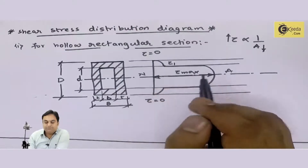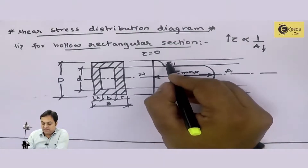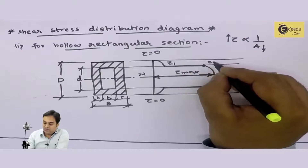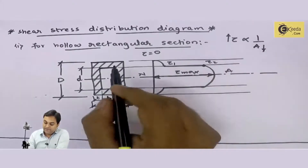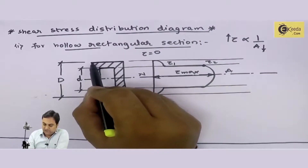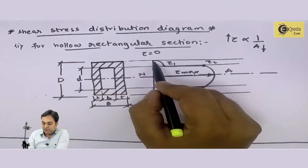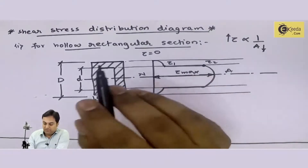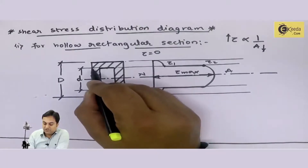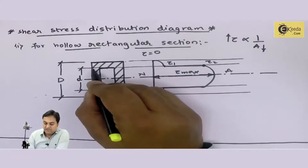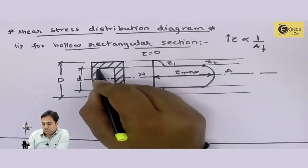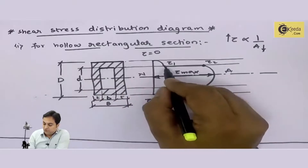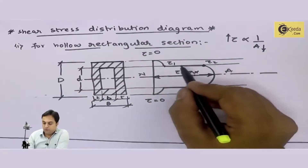I can write this as tau1 — tau1 is the stress at the inner layer. After this, I have another shear stress value which is called tau2. The width decreases from capital B to small b; when width is decreased, the shear stress goes from tau = 0 to tau1, that is from outer width to inner width. Here is the thickness of the flange, and if I need this portion of the shear stress, that would be called tau2. Because this width is less, the shear stress is more. The value of tau2 will be more than that of tau1.